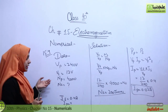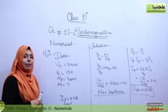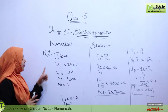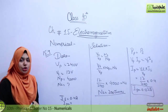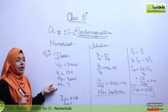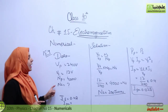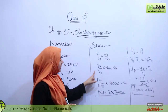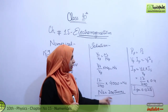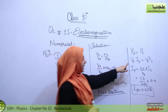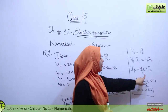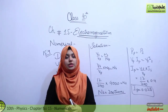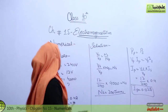In this numerical, VP and VS were given, NP was given, and IS was given. It resembles a previous numerical but here the problem was given in parts — first find NS, then find IP. We were given voltages, turn ratio, and one current value. To find IP, we used the power formula, rearranged it, substituted all values, and calculated the answer as 0.02 ampere.